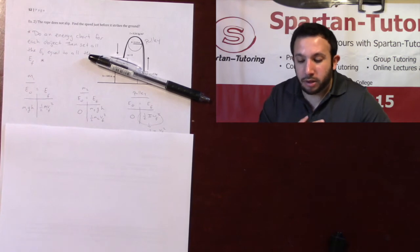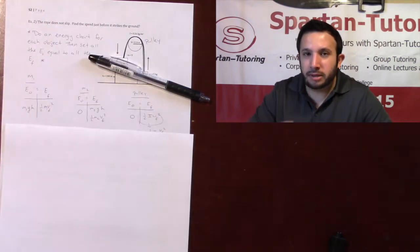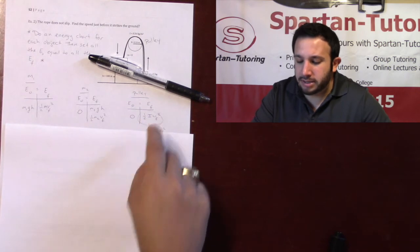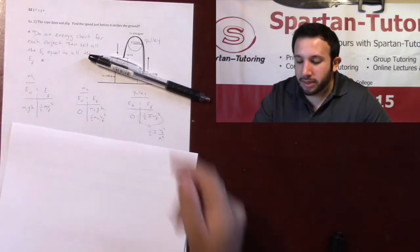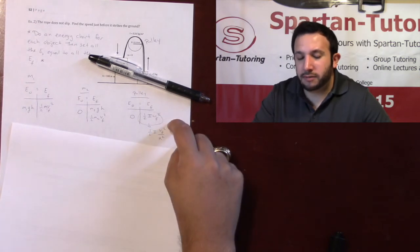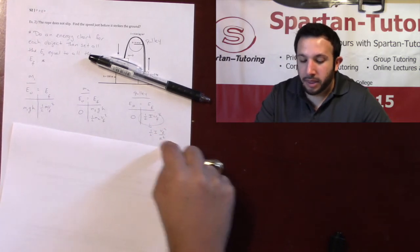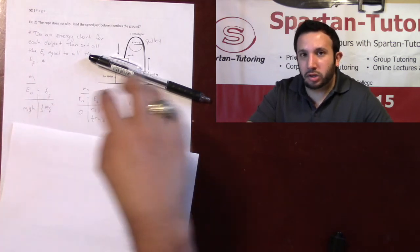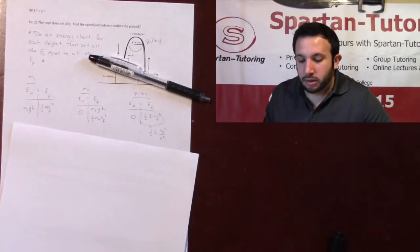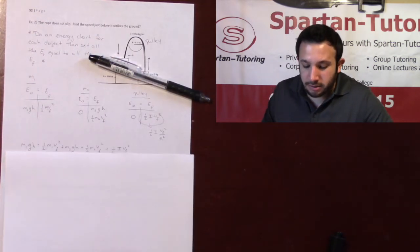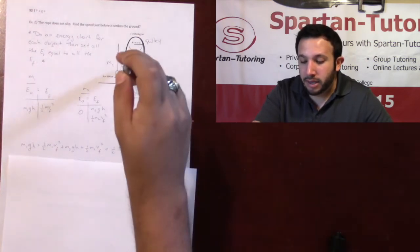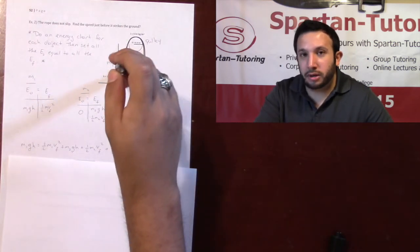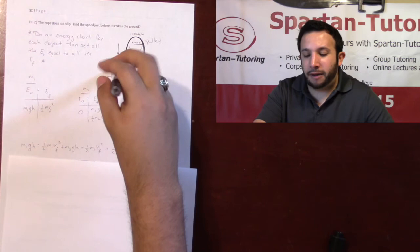But remember, what am I looking for? I'm looking for speed. I'm looking for my linear velocity. So I'm going to replace that omega with V over R. That way, that omega F squared is just VF squared over R squared. And once you set up an energy chart for each object individually, you set all the E naughts, which is just the M1GH, equal to all the EFs.